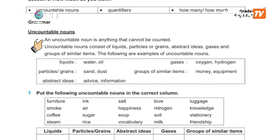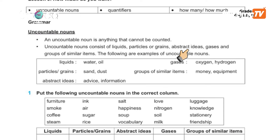Uncountable nouns consist of liquids, particles or grains. Particles and grains can be counted. There are also abstract ideas and gases — oxygen, nitrogen — which are known as uncountable nouns. And groups of similar items.